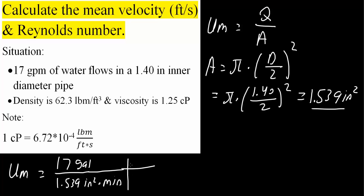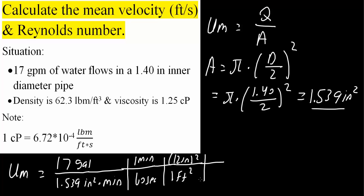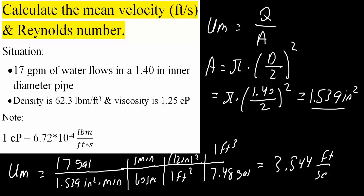We convert inches squared to feet squared using 12 inches = 1 foot, so 144 inches squared equals 1 foot squared. We also convert gallons to feet cubed using 7.48 gallons equals 1 foot cubed. Multiplying everything out, we get 3.544 feet per second. Checking our units: gallons convert to feet cubed, minutes to seconds, and inches squared to feet squared, giving feet cubed divided by feet squared, which is feet per second.